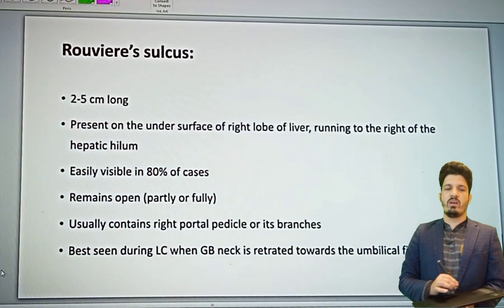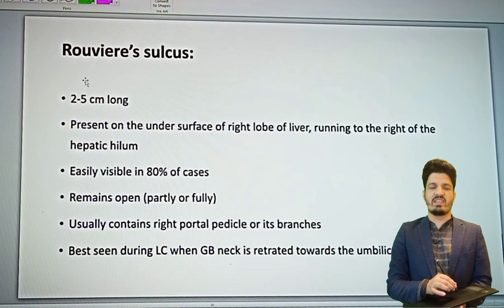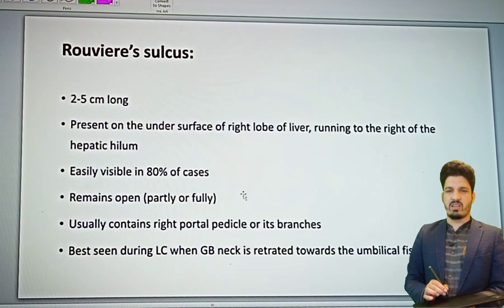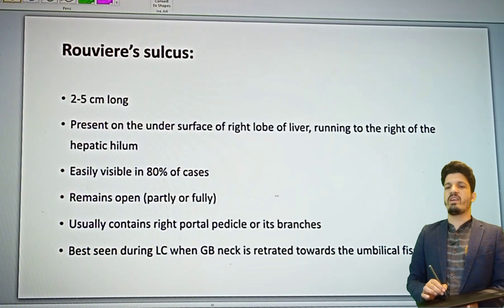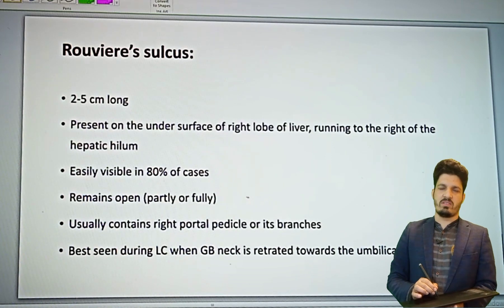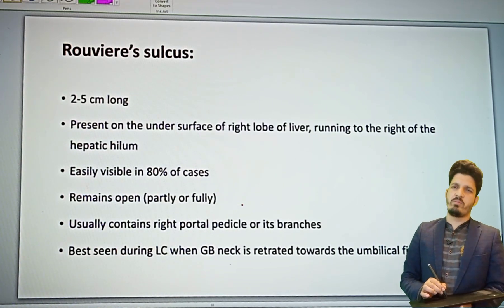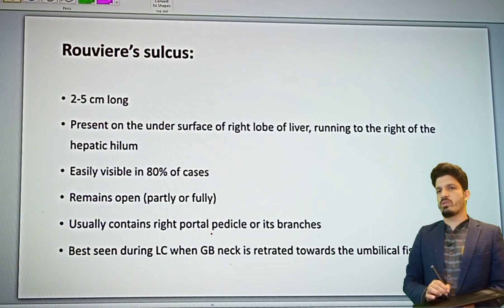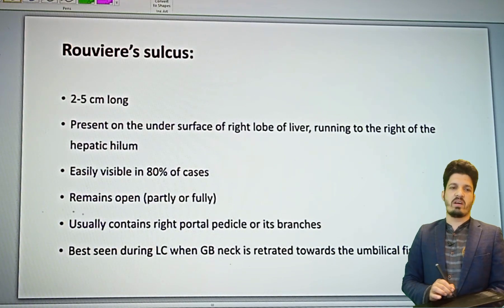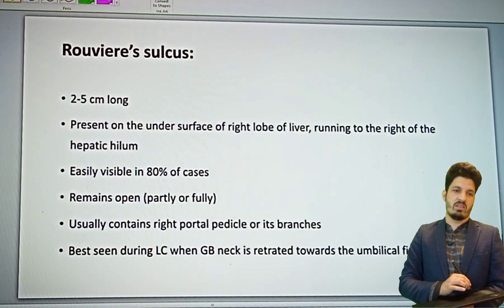Rouviere's sulcus is two to five centimeters long, present on the undersurface of the right lobe of the liver. It is easily visualized in 80% of patients; in 20% it is not visualized and may remain open partially or fully. It is the most important landmark for safe cholecystectomy — your dissection should always be above this sulcus.